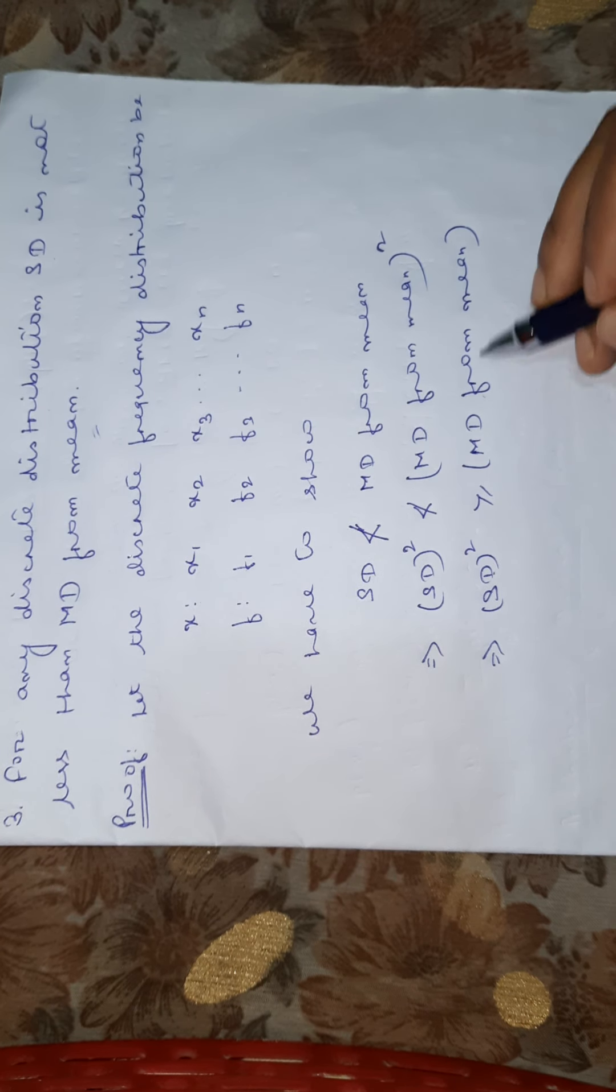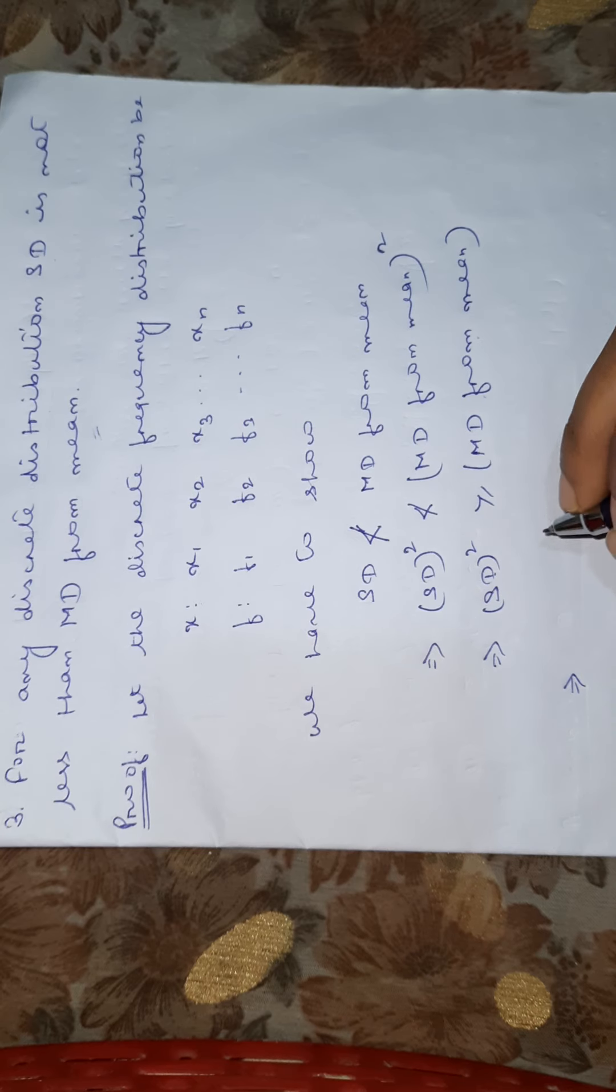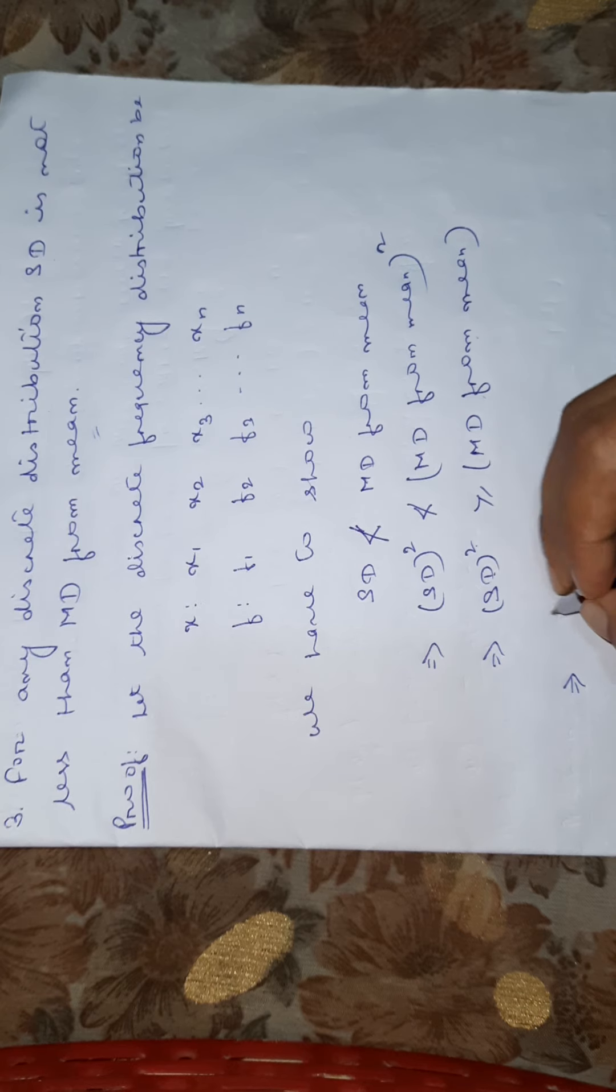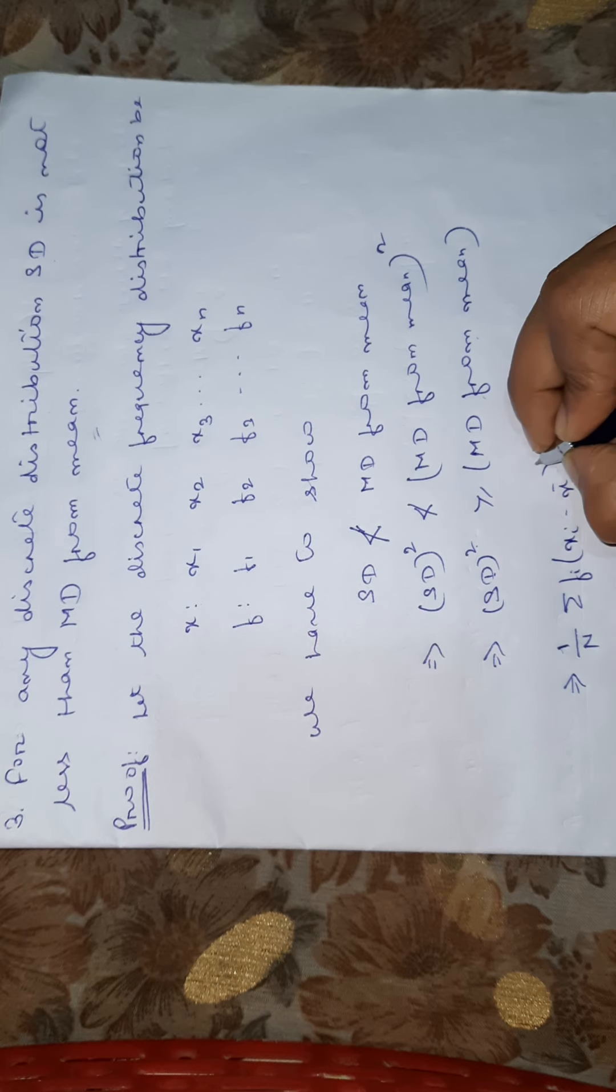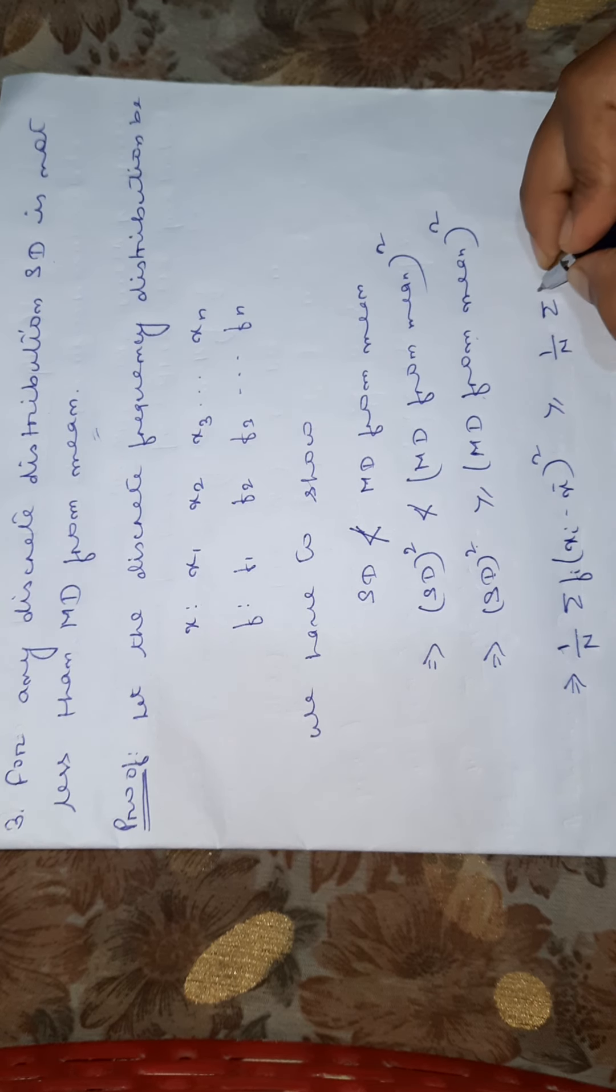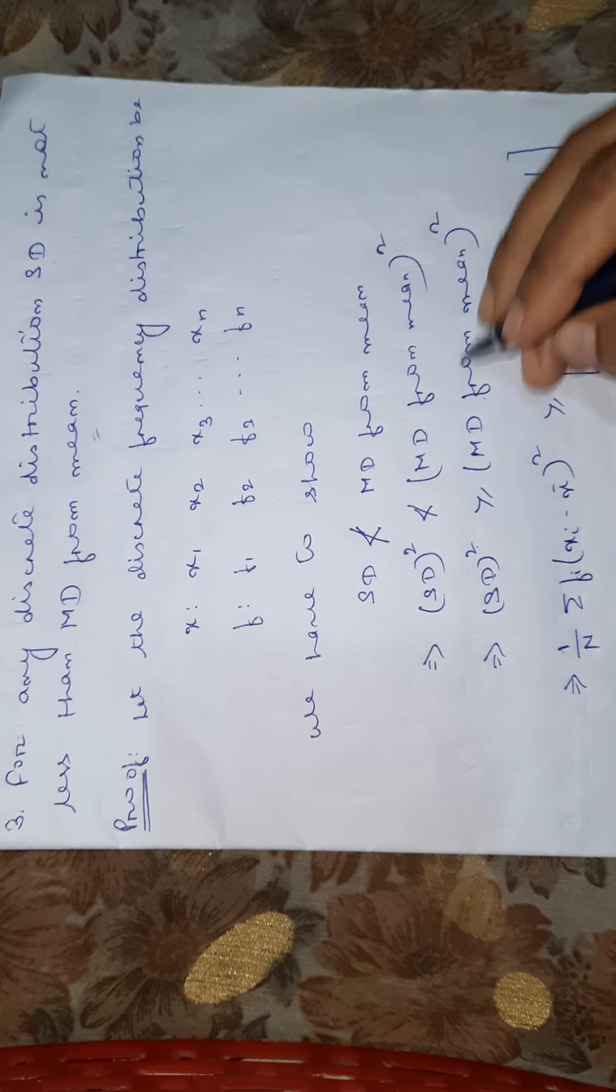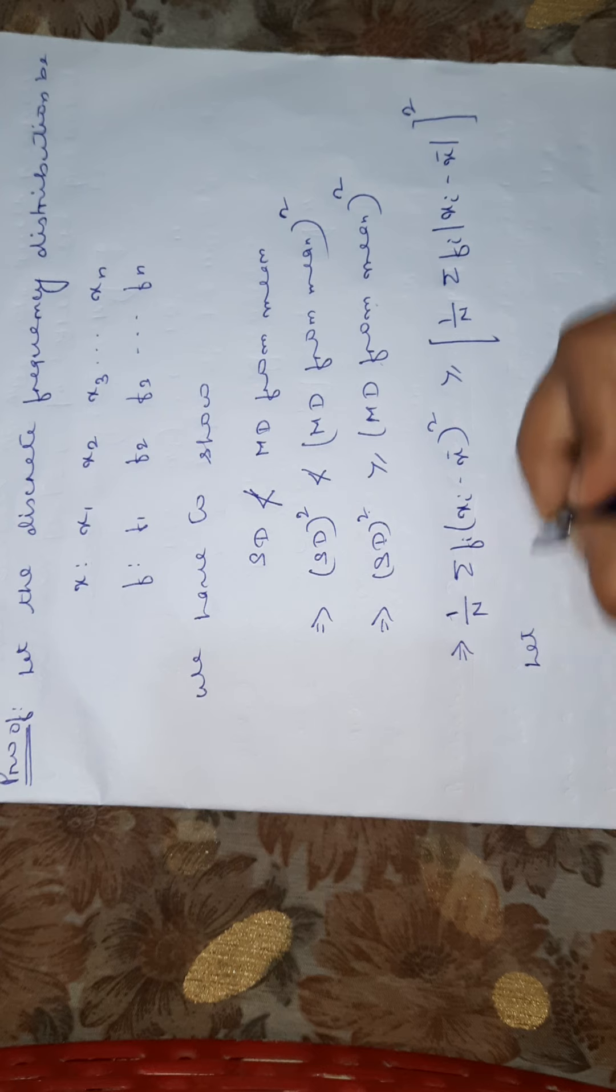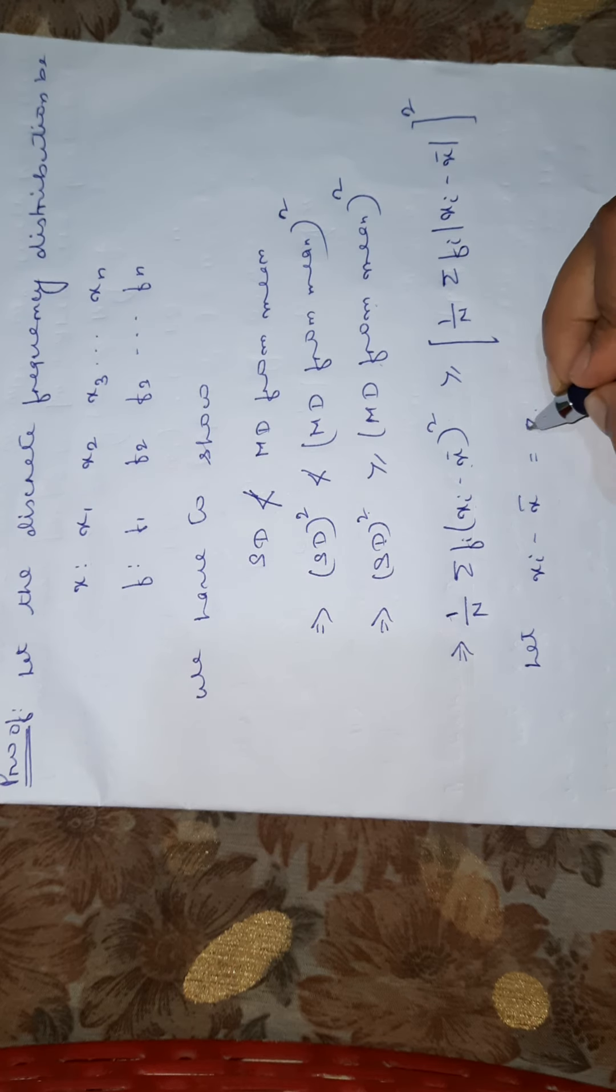The formula for standard deviation is square root of one by n summation of fi times xi minus x bar whole square. This is greater than or equal to one by n summation of fi times the modulus of xi minus x bar, whole square. Now let xi minus x bar equal to z.